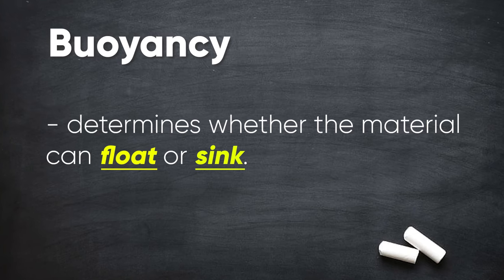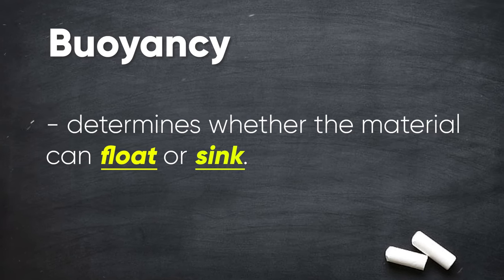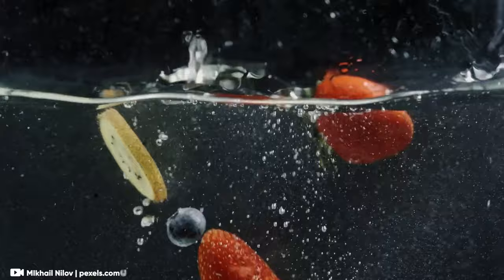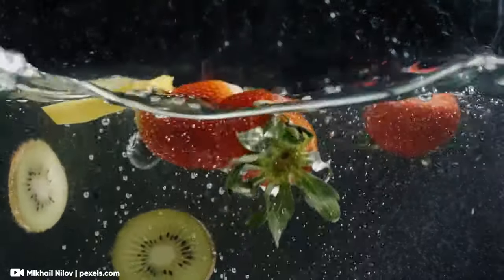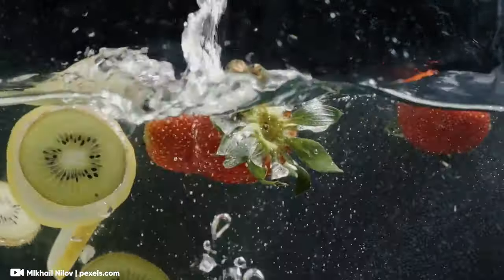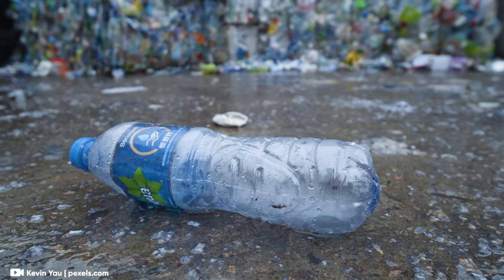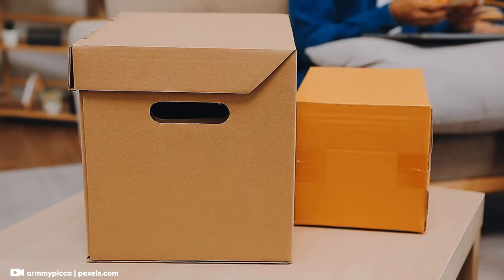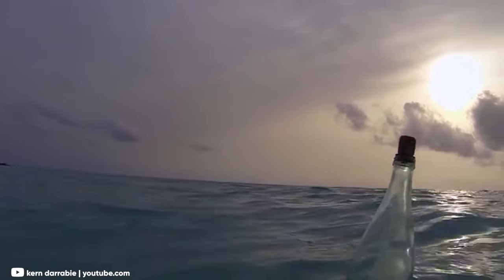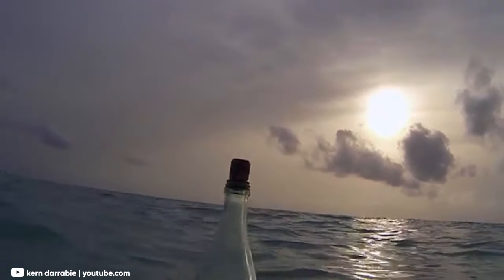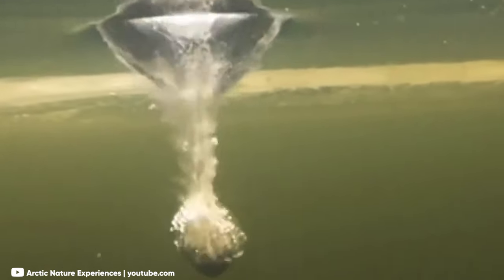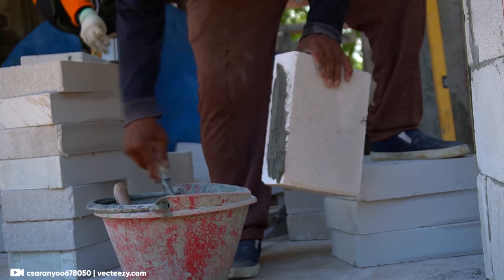We now go to buoyancy. This determines whether an object can float or sink. Lighter objects float, and objects that can float are identified as buoyant. Examples of buoyant objects are materials made out of light plastic, styrofoam, paper-based materials and empty containers with air inside them, while heavier objects that will sink are non-buoyant materials, like rocks, metals, glass and objects made of concrete.